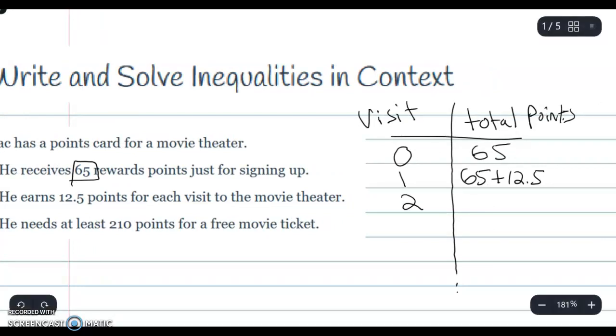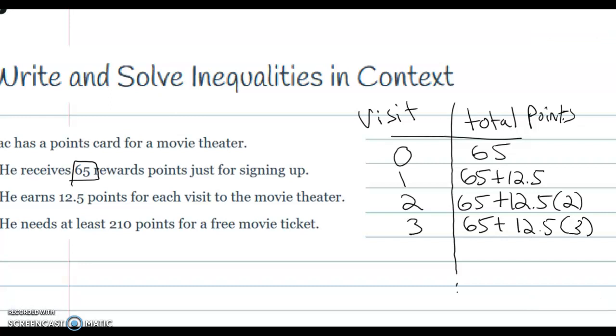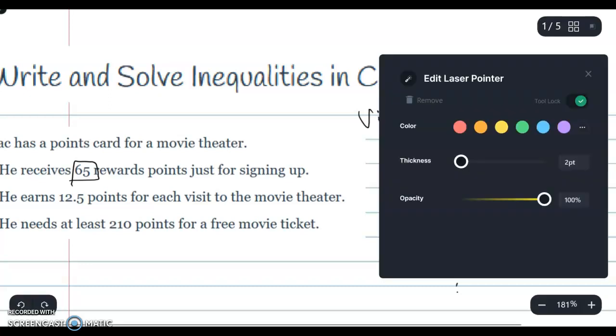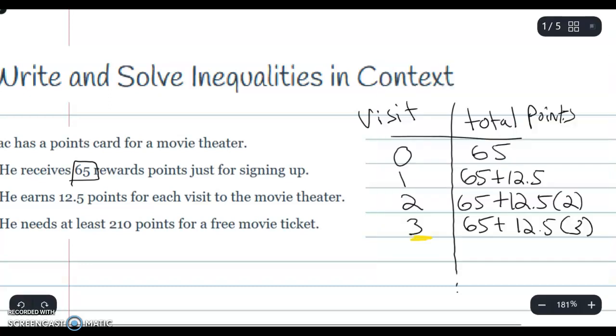Let's say he has two visits, it'll be 65 plus 12.5 times 2. Let's say he's at three visits, it'll be 65 plus 12.5 times 3. For every visit we're adding another 12.5 and we're multiplying by the number of visits here. You see how you got three visits, three times 12.5, two visits, two times 12.5, and so on.